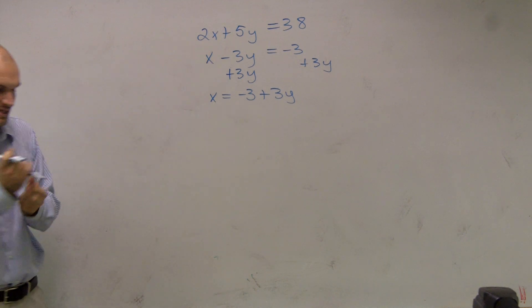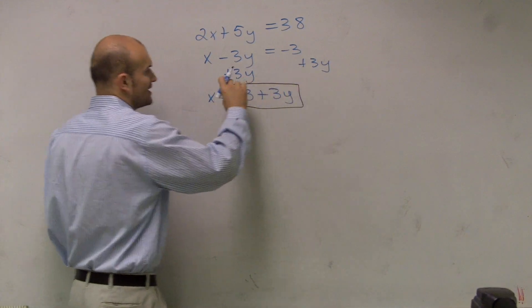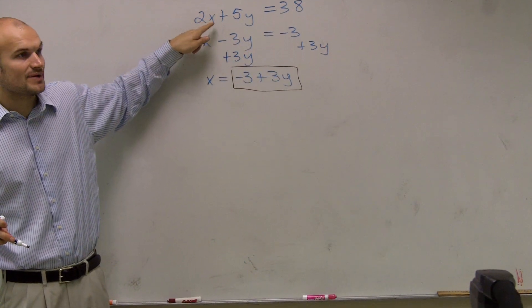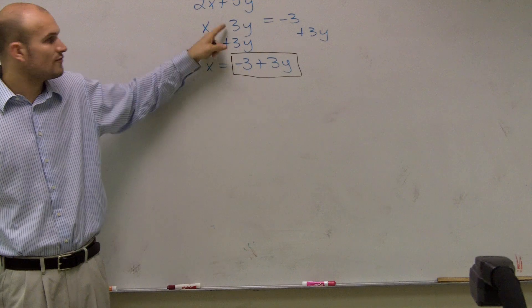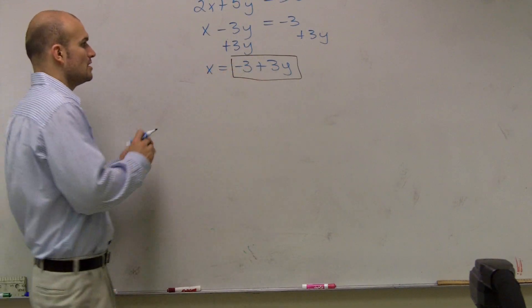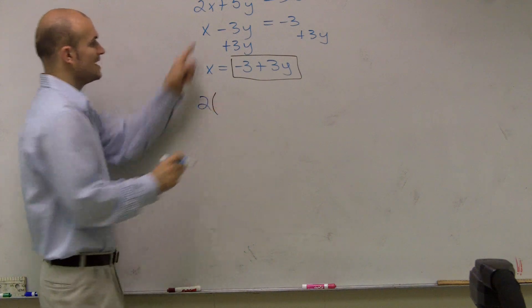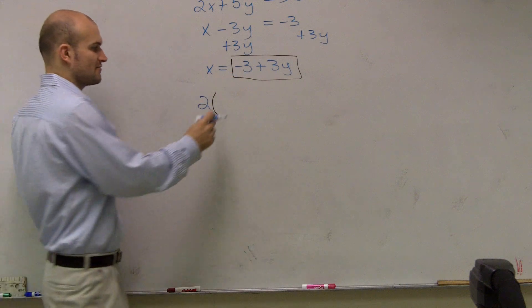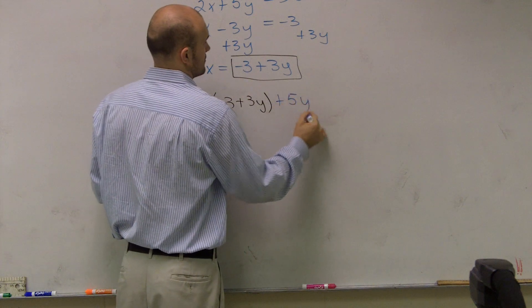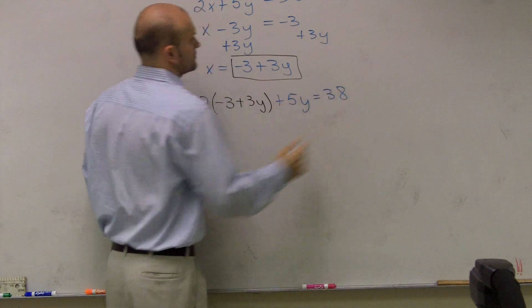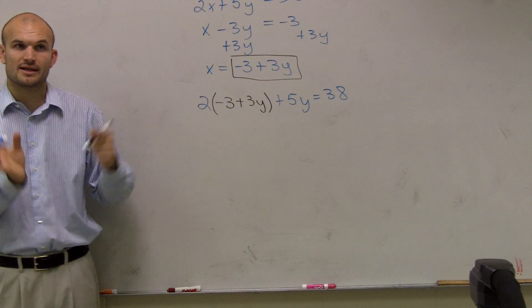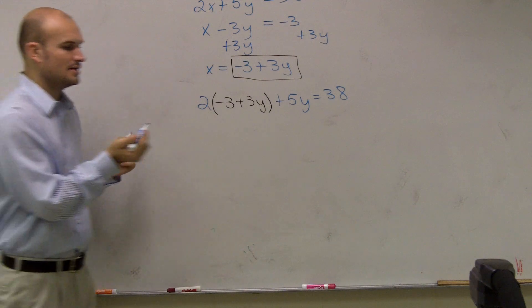What I'm going to do is, I can now say that x equals negative 3 plus 3y. So rather than writing x up there, I can write in the value of what x is from my second equation, which is negative 3 plus 3y. So I'm going to write 2 times, instead of x, I'll write what the value of my x is from the other equation. Does everybody see what I did? I solved for a variable in one equation, and I substituted that into the other equation.